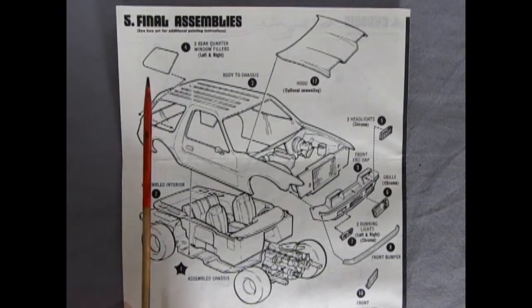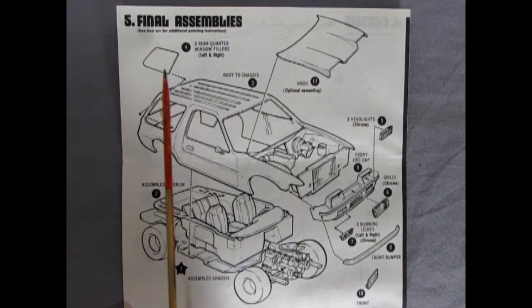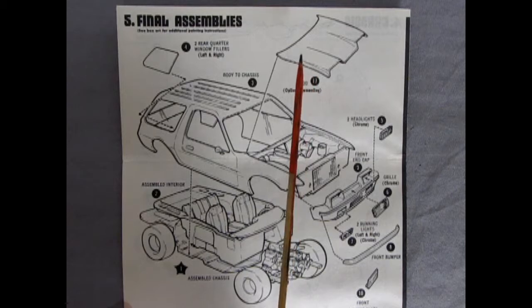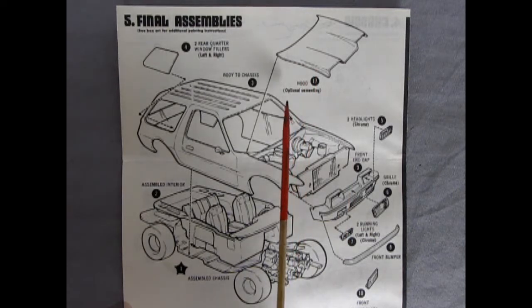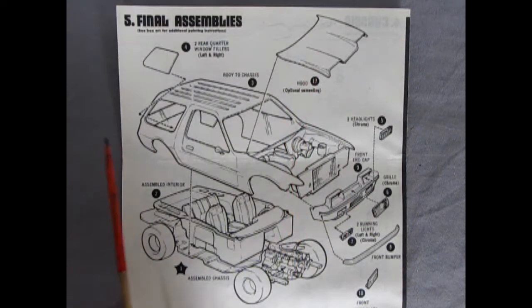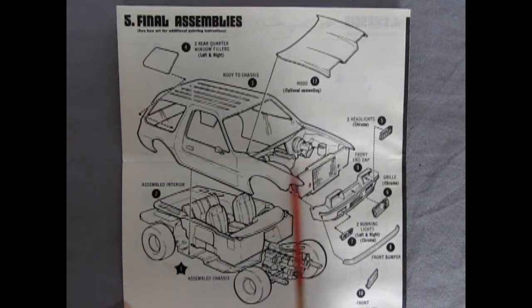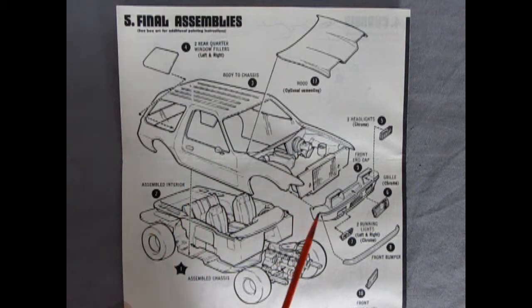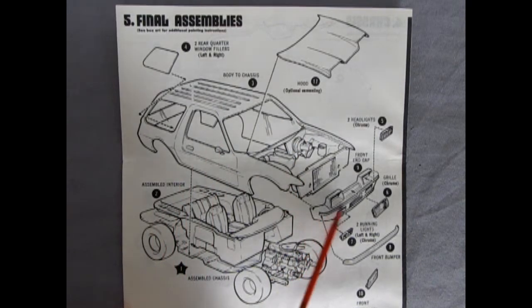Panel 5 shows our final assemblies and here we have the window filler blanks going in on the side which you glue in place. Then we've got our custom hood which drops on. It does say you could glue this down but who would want to? I mean, you're going to cover up all that nice detail under there as well as the engine and never be able to see it again. So I'm going to leave mine open.